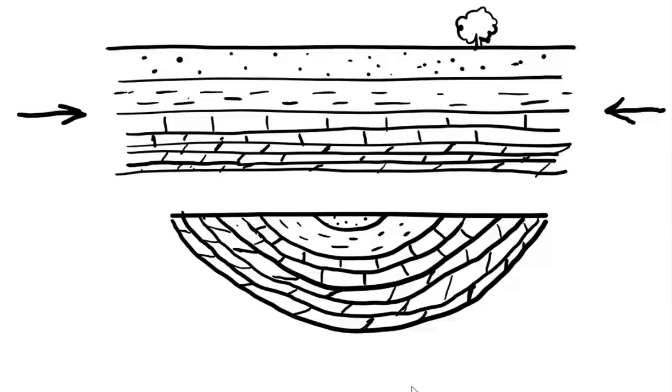Our syncline has all of our rock formations folded downward in the center. That means that our youngest rock formation, the sandstone, will be exposed on the surface at the center of this fold.